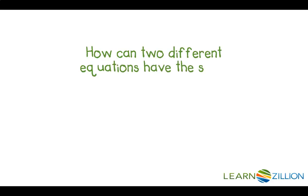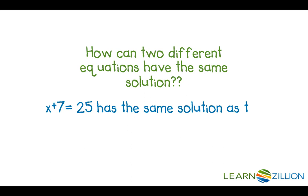How can two different equations have the same solution? For example, x plus 7 equals 25 has the same solution as the equation x plus 14 equals 32.